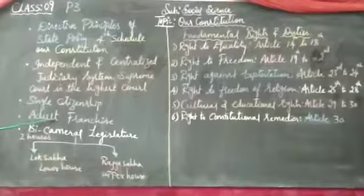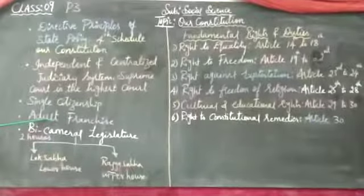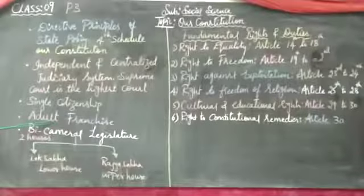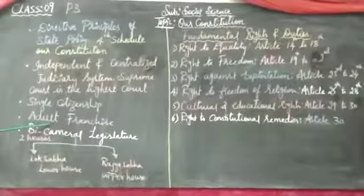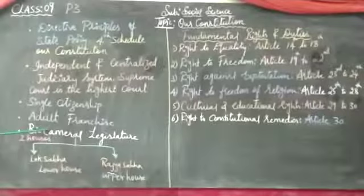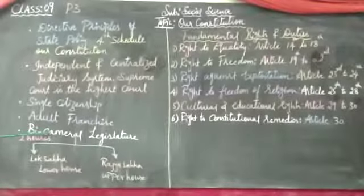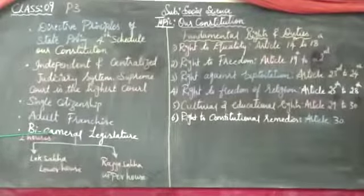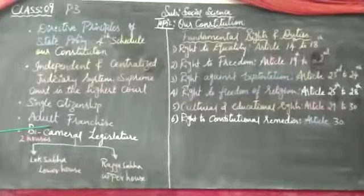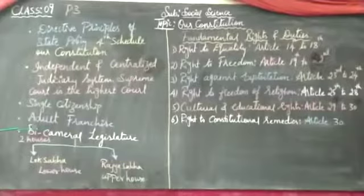Next comes adult franchise. What is adult franchise? It is the right to vote. From 18 years of age, we are called citizens of India with the right to vote. Till 17, you are considered an adolescent and won't get this right. So 18 years is the exact age where you can be part of elections.